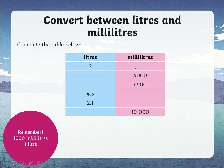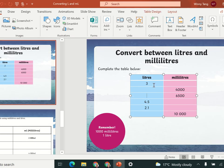Three liters in milliliters: you multiply by 1,000 and it would be 3,000 milliliters. If you had 4,000 milliliters, you divide by 1,000 — take away the three zeros — and that would be 4 liters.